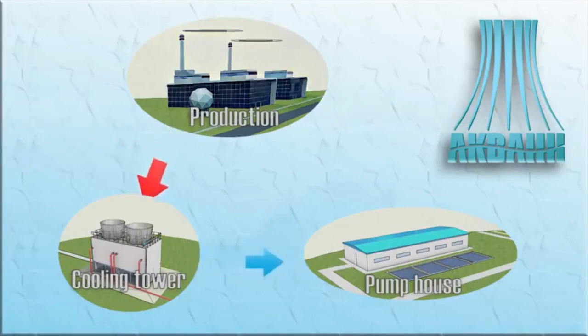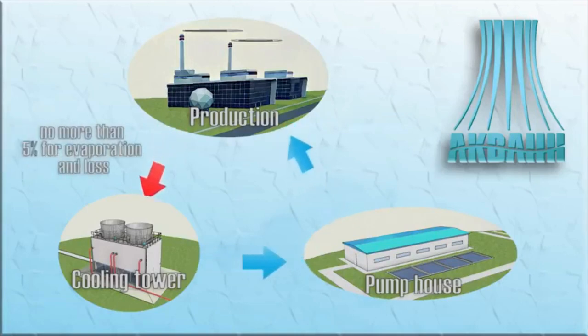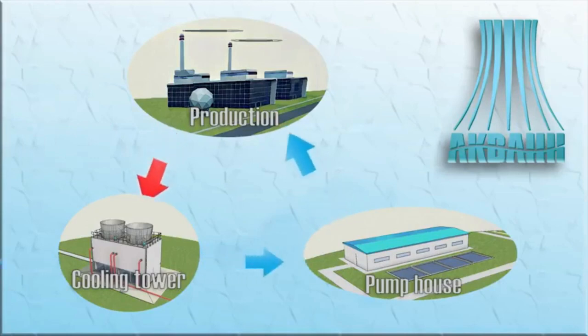After cooling, the main volume of recycled water is fed back into the process cycle. Usually no more than 5 percent of water is lost to evaporation, drip loss, leakage, and discharge into a blow-down system. Losses are replenished by fresh water makeup.